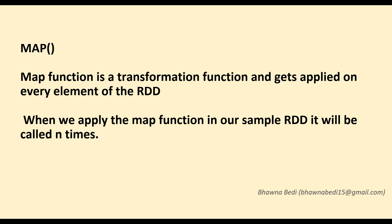Whatever function you specify in the map — that is essentially the transformation function. So map gets applied to each and every element of an RDD, and the transformation you specify in the map function is what gets applied to each element. You call map with a transformation function, and because you're using map, it will get applied to each and every element of the RDD.